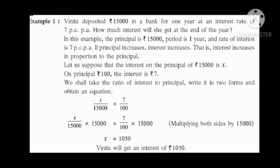Now let us see the examples. There are two methods. The first method is by forming a ratio and solving the equation. Vinita deposited rupees 15,000 in a bank for 1 year at an interest rate of 7% per annum. How much interest will she get at the end of the year? Here the principal is rupees 15,000, the period or time is 1 year, and the rate of interest is 7% per annum. If the principal increases, interest also increases — that is, the interest increases in proportion to the principal.